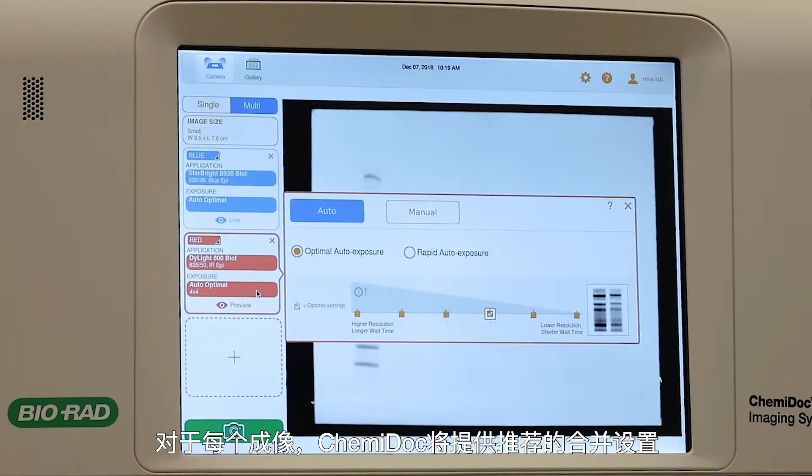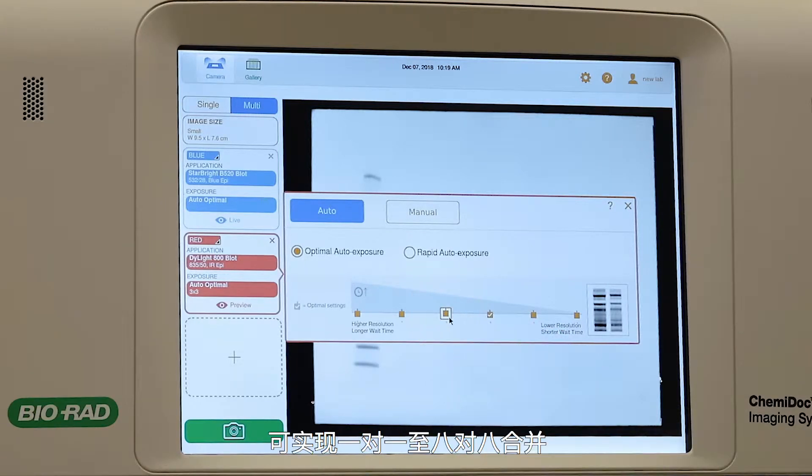The KemiDoc will provide a recommended binning setting for each image. But user control is enabled to adjust from 1x1 to 8x8 binning.